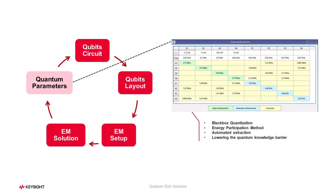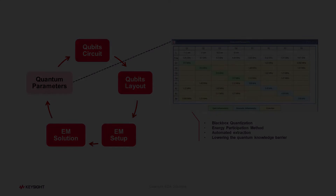Delve into the heart of quantum intricacies as QuantumPro automatically computes and presents quantum parameters within an intuitive square matrix, encapsulating the captivating nonlinear traits of quantum elements — from qubit anharmonicities to resonator nuances, and the interplay of coupling strengths through cross-coupling values.